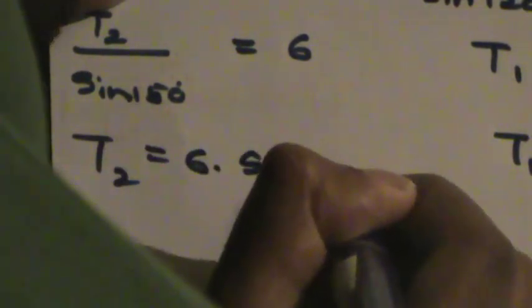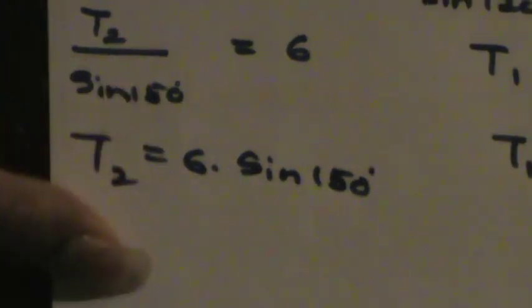For T2: T2 divided by sine 150 equals 6, so T2 equals 6 times sine 150. Sine 150 equals sine 30, which is one half, so T2 equals 6 times one half, which is 3 newtons. So T1 equals 3 root 3 newtons and T2 equals 3 newtons. Those are the solutions by Lamy's theorem. In the next video, I will be talking about how Lamy's theorem can be applied when there are more forces. Hope to see you back with that video.